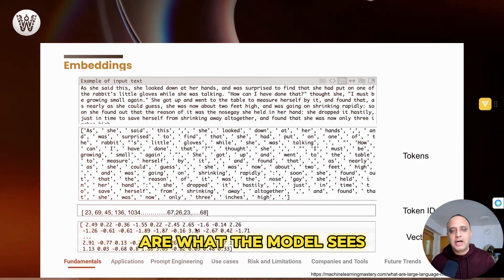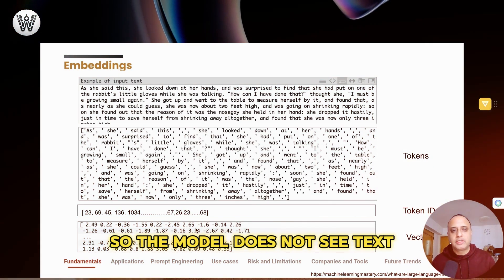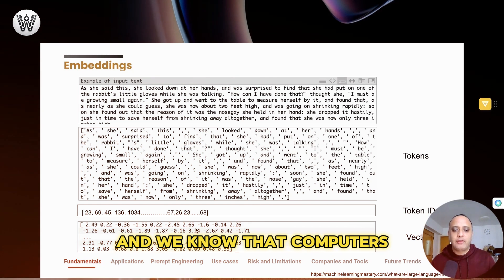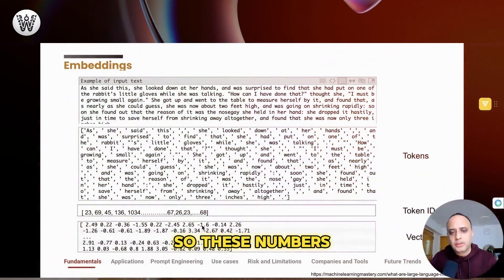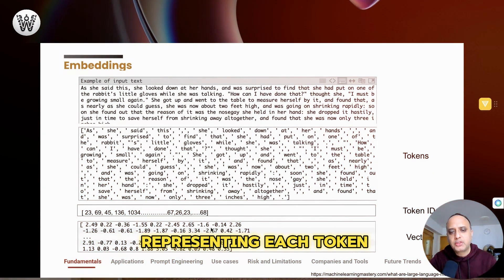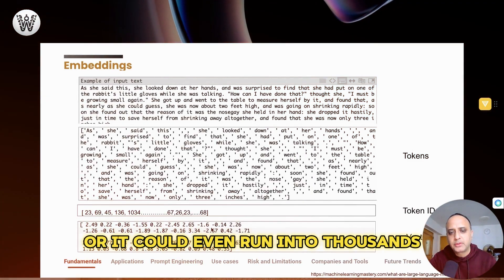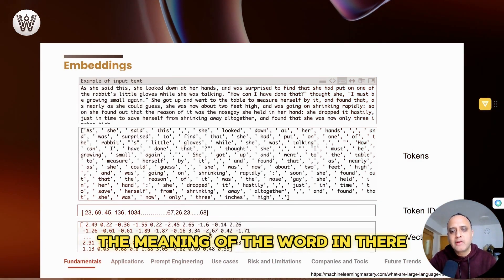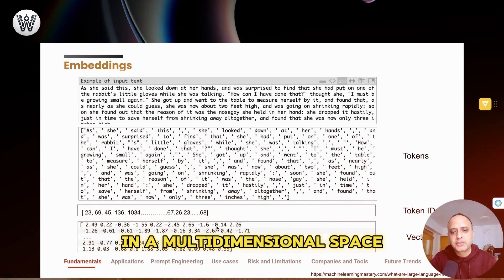These numbers are what the model sees. So the model does not see text, the model sees a bunch of numbers, and we know that computers only work with them. So these numbers, which can run into hundreds representing each token, or it could even run into thousands, represent in some way the meaning of the word in a multi-dimensional space.